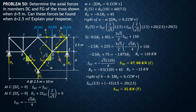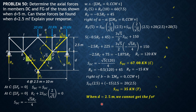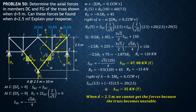So the member forces are S_DC equals 67.08 kN compression and S_FG equals 35 kN tension. Answering the question — can these forces be found when d is 2.5? The answer is no, because when d equals 2.5, the truss becomes unstable. You may continue analyzing with d equals 2.5 and you will find that the truss becomes unstable or leads to inconsistent results.